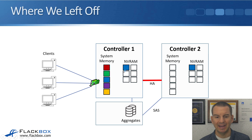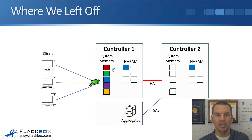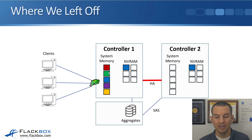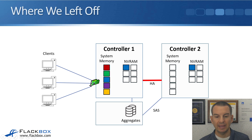The reason we have both system memory and NVRAM is that system memory is used as the cache to improve performance, but system memory uses DRAM — dynamic RAM — which does not survive a power outage. If we just had system memory and no NVRAM, a client could write data to the system, receive an acknowledgement, and then if there were a power outage before the consistency point wrote the data to disk, that data would be gone and we'd have an inconsistent state. NVRAM is non-volatile RAM, meaning we don't lose its contents during a power outage.